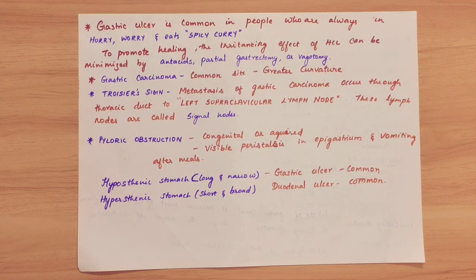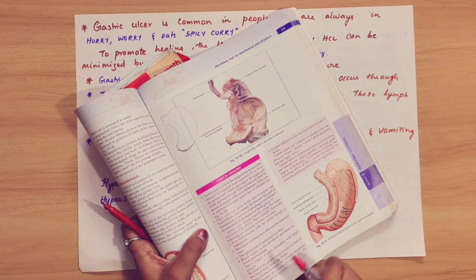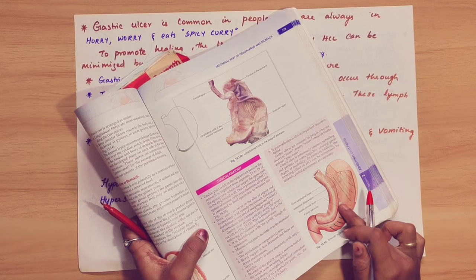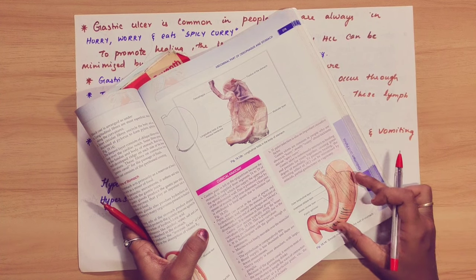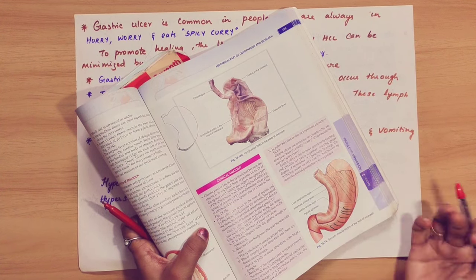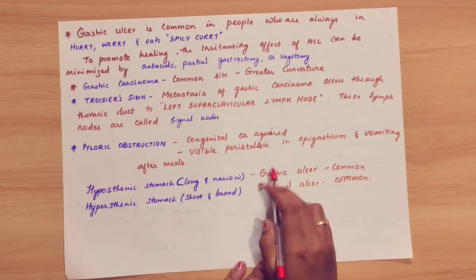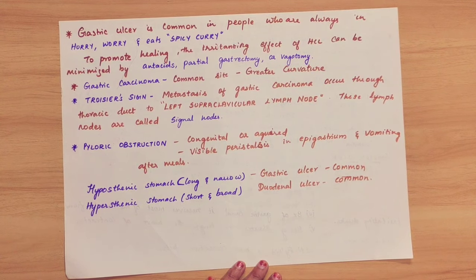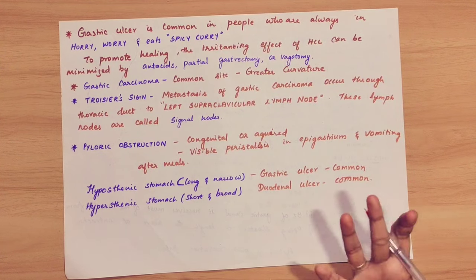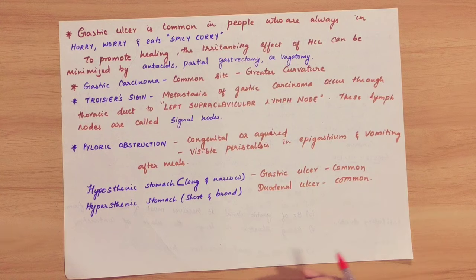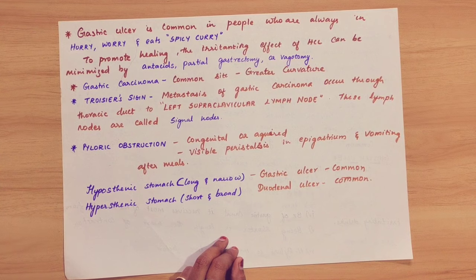Pyloric obstruction: the pyloric sphincter is closed and blocked, preventing correct digestion. This pyloric obstruction can be congenital — present by birth. Peristaltic movement in the GIT is easily visible in the epigastric region, which is why these patients vomit.